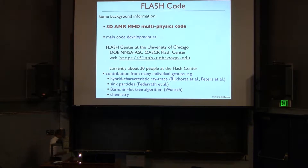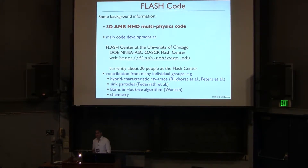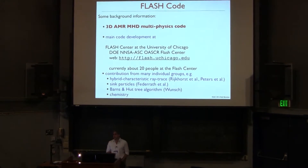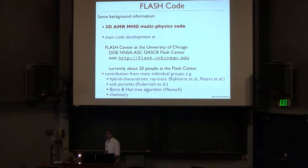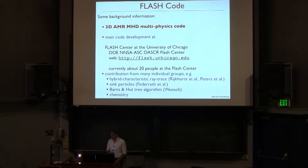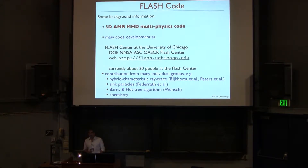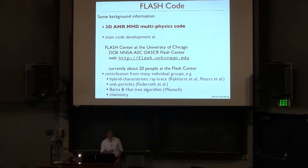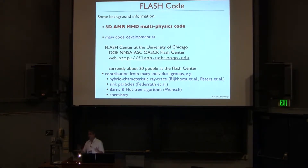The main message here is the FLASH code is developed at the University of Chicago at the Flash Center. It's funded by the DOE, and there are around about 20 people actually working on it. The FLASH code itself is a three-dimensional adaptive mesh refinement code for hydrodynamics and magnetohydrodynamics, and it's a multi-physics code, so you can handle not only gas dynamics but many other purposes as we will see.